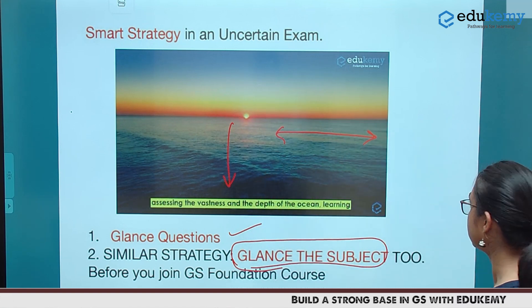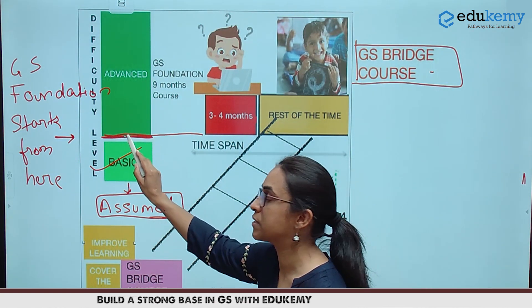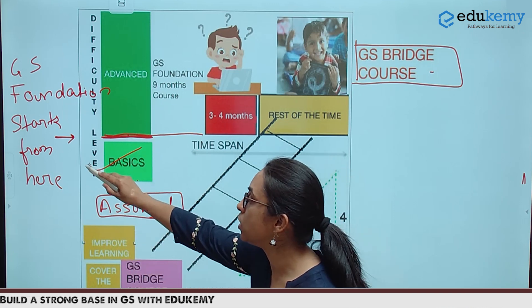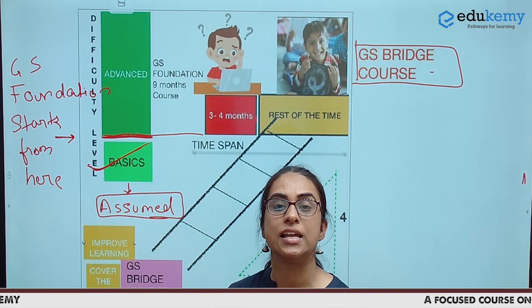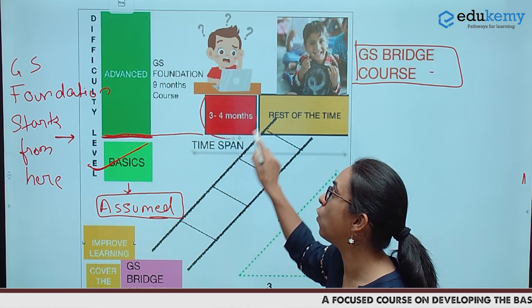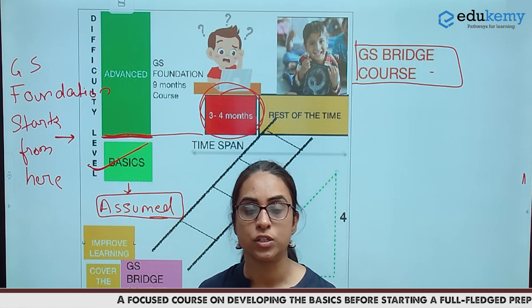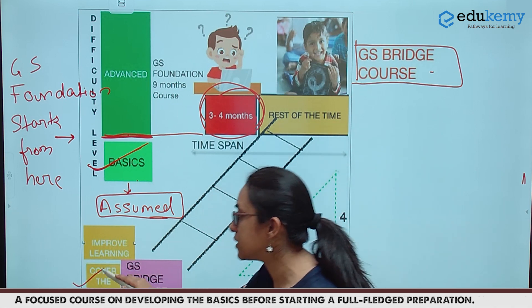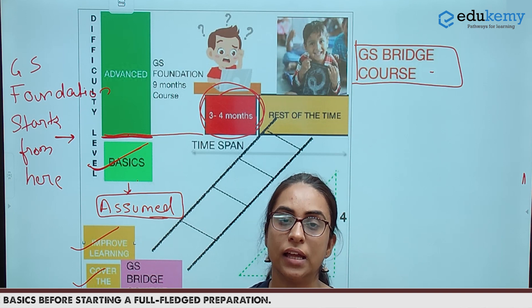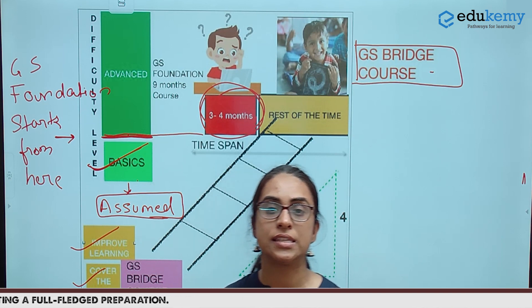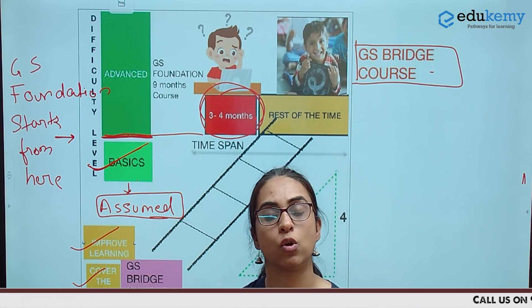The rationale is that in a GS Foundation course, teaching starts from the advanced level concepts and it is assumed that the student knows the basics. The result of this is that the student is left confused for nearly 3 to 4 months. Here, to fill the gap, we have come up with the GS Bridge course which focuses on covering the basics as well as improving the learning. It is also possible that a student can cover the basic books and concepts by himself or herself, however it requires more time.